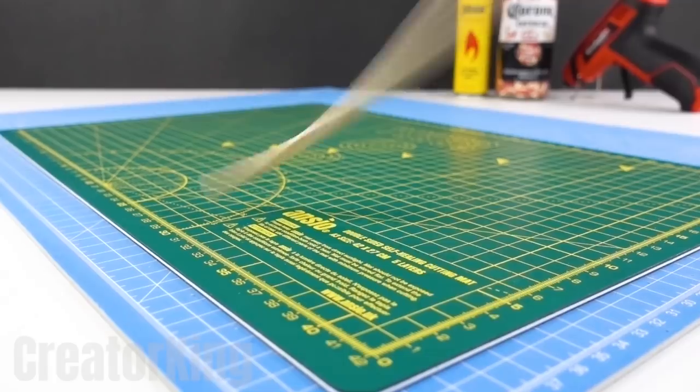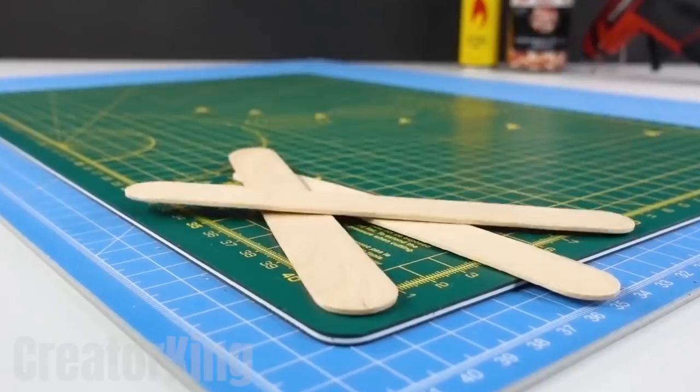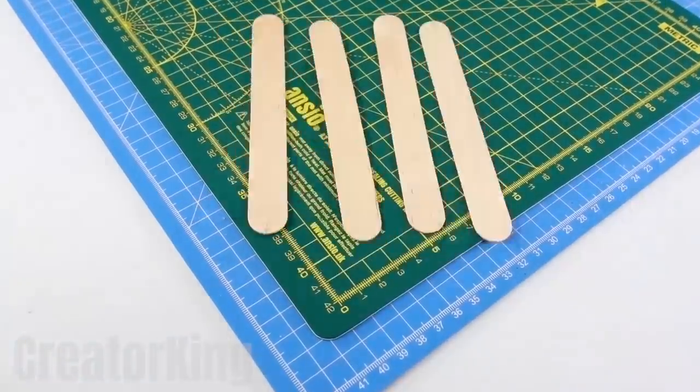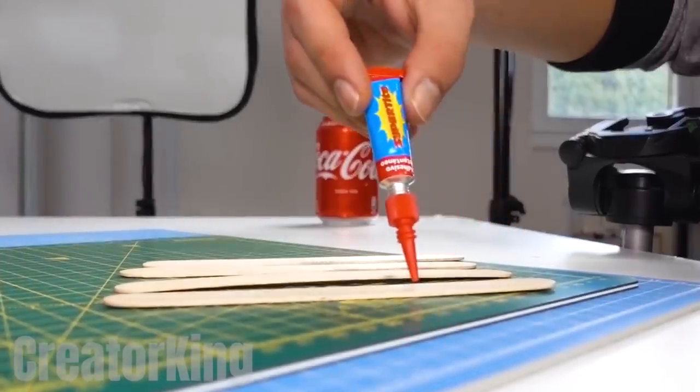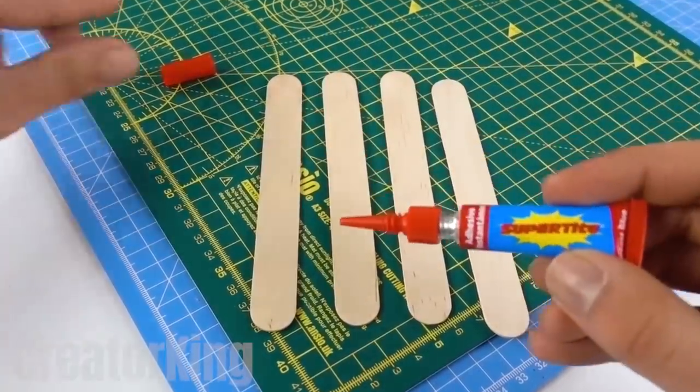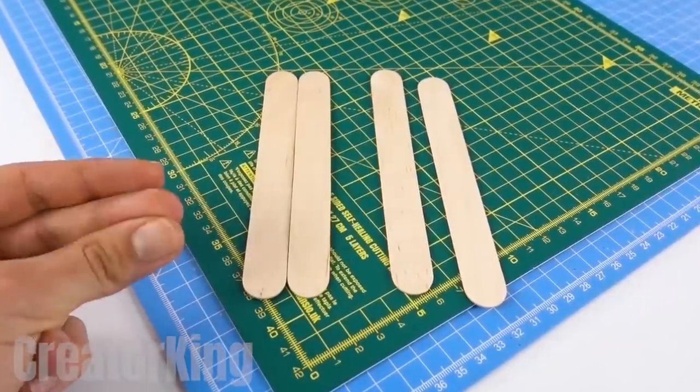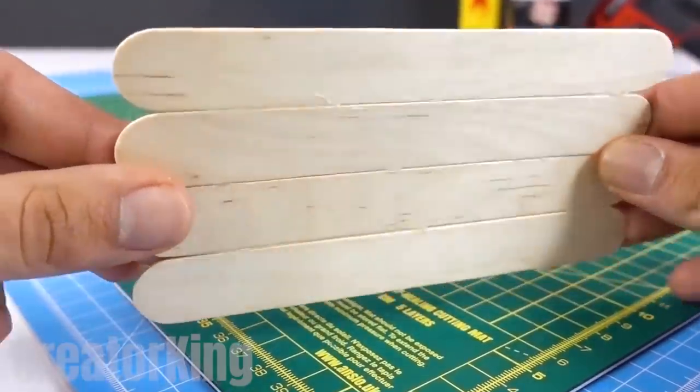We will start the next invention with a popsicle stick. Two popsicle sticks. Three popsicle sticks. Four popsicle sticks. With a snap, we'll order them to settle down. Then we'll glue them together with a little instant glue. Don't forget to put the lid back on so it doesn't dry out. Two popsicle sticks. With our table of popsicle sticks ready, we will proceed to take a well-deserved rest with an icy cold soda.